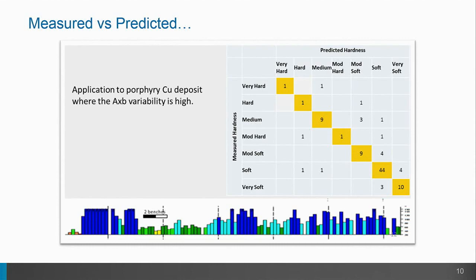They've started looking at how predicted versus measured results are occurring and how the model results are coming together. This is an example from a copper porphyry where you have predicted along the top and measured along the side. You can start to see there are quite good results and correlations between the predicted and the modelled. But obviously there are still areas where the classification and textural analysis has to be tuned up to understand if we're actually truly capturing that Geomet property, and there's quite a lot of work there to be done.